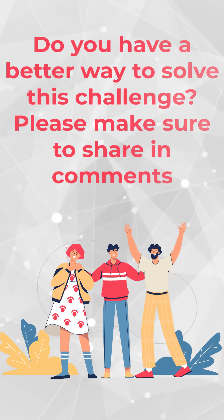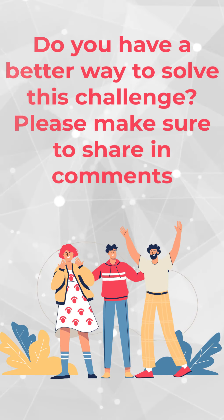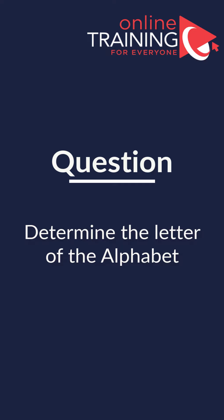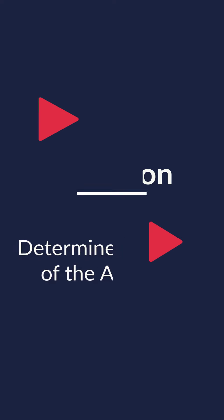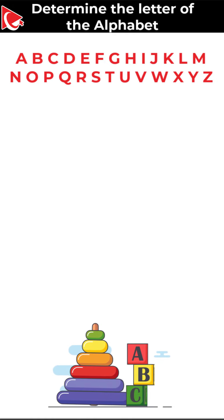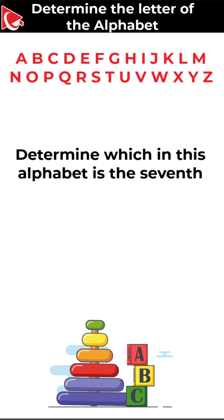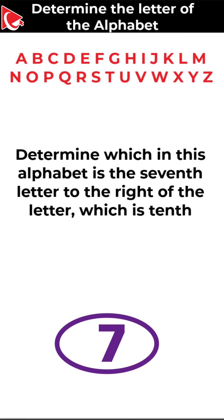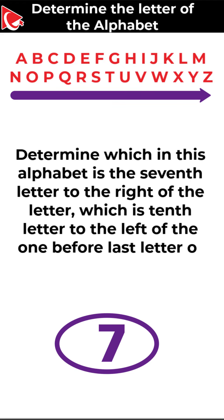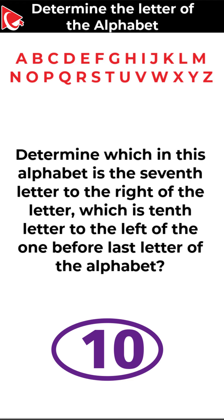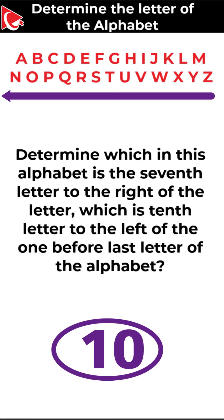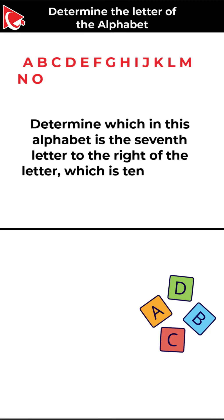Hopefully you've nailed this question and now know how to answer similar problems on the test. Here is a very interesting question where you need to determine the letter of the alphabet. You're presented with 26 letters of the English alphabet and you need to determine which letter is the 7th letter to the right of the letter which is 10th letter to the left of the one before last letter of the alphabet. You have four different choices.